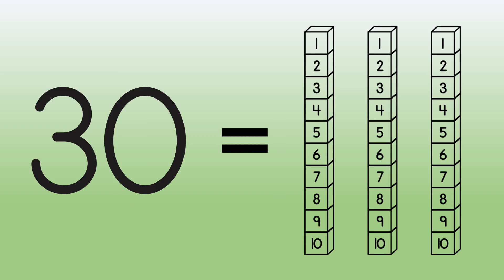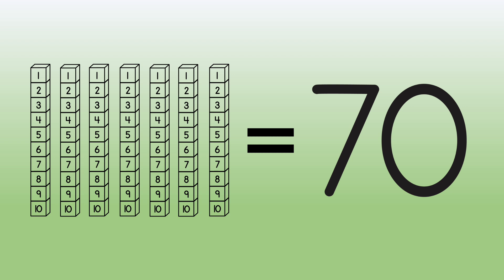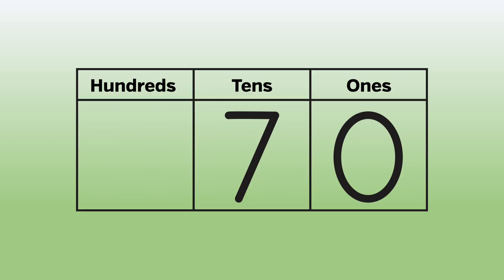30 is three longs. Seven longs is 70. We can skip count by tens when we have a group of longs. 10, 20, 30, 40, 50, 60, 70. The number of longs goes here in a place value chart.